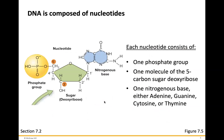DNA is actually composed of nucleotides. Each nucleotide consists of one phosphate group, one molecule of deoxyribose sugar — which is a five-carbon sugar — and a nitrogen base. For DNA, there are four nitrogen bases.